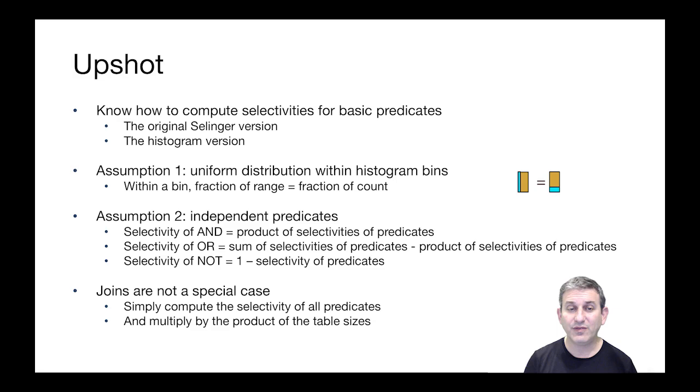Finally, the selectivity of a NOT is 1 minus the selectivity of the predicate that's being negated. Joins are not a special case in this discussion.